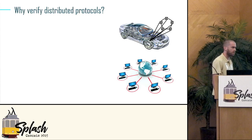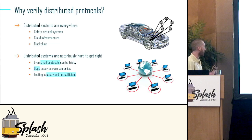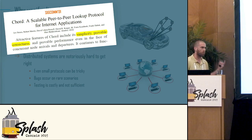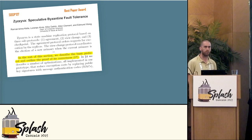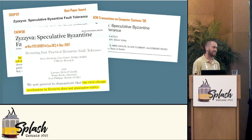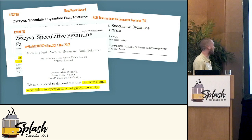Why did we choose distributed protocols? Basically because they're everywhere. And academia can't really find a good way to verify them. Some quick examples — Raft, which we found is not really correct, and Ziziva, a best paper, something that should be correct, and not really. These are smart people, and they got it wrong. So we need something better.